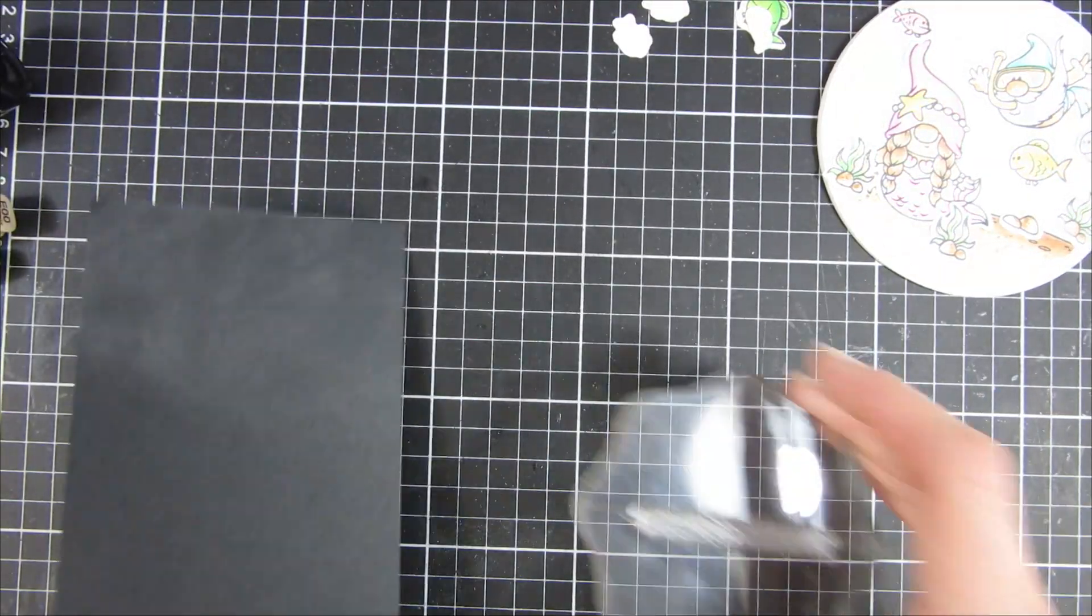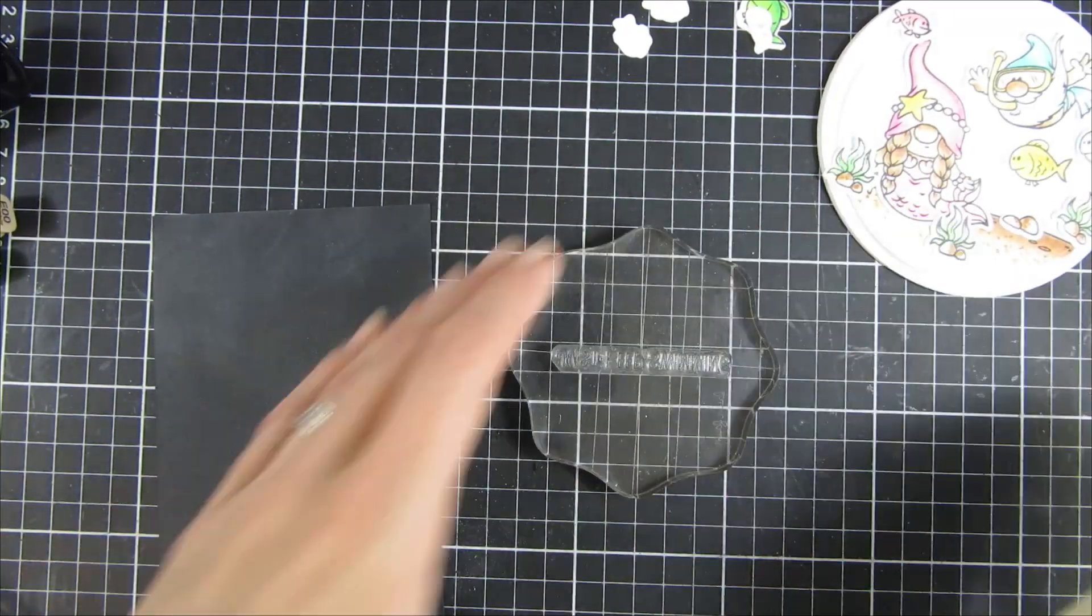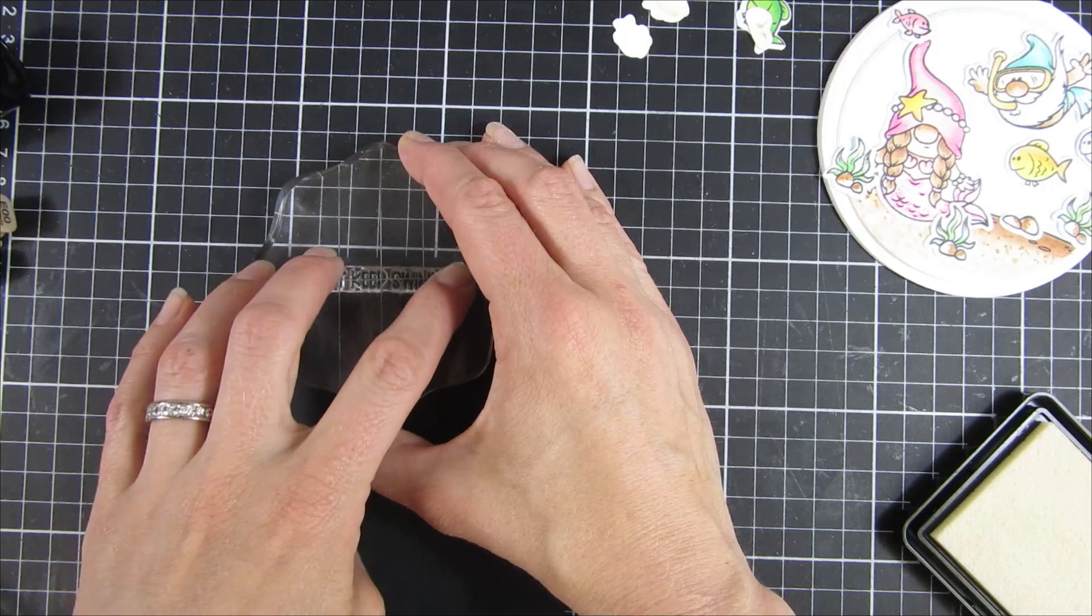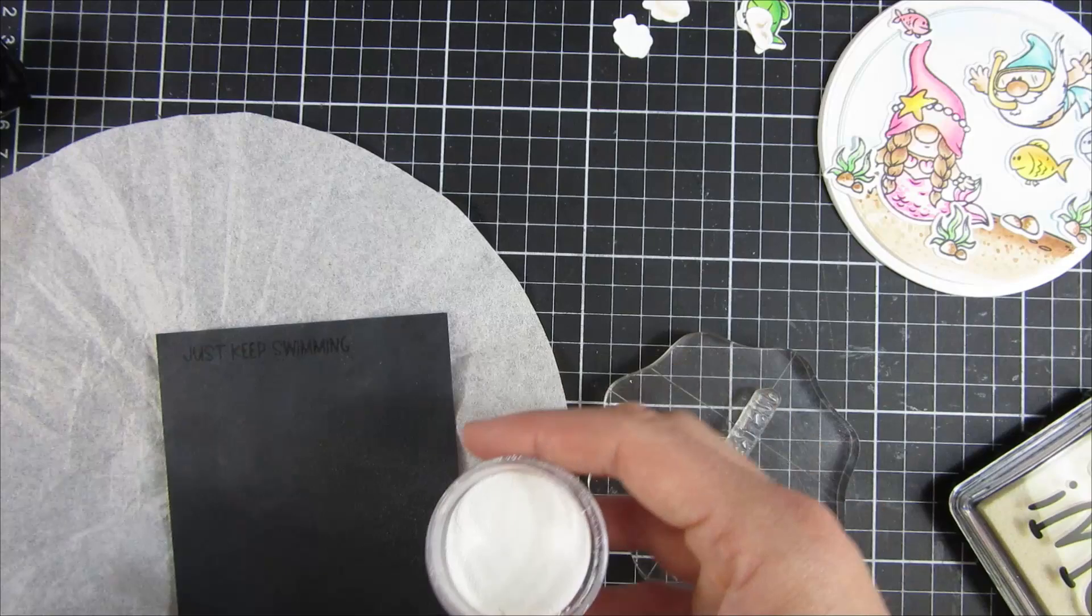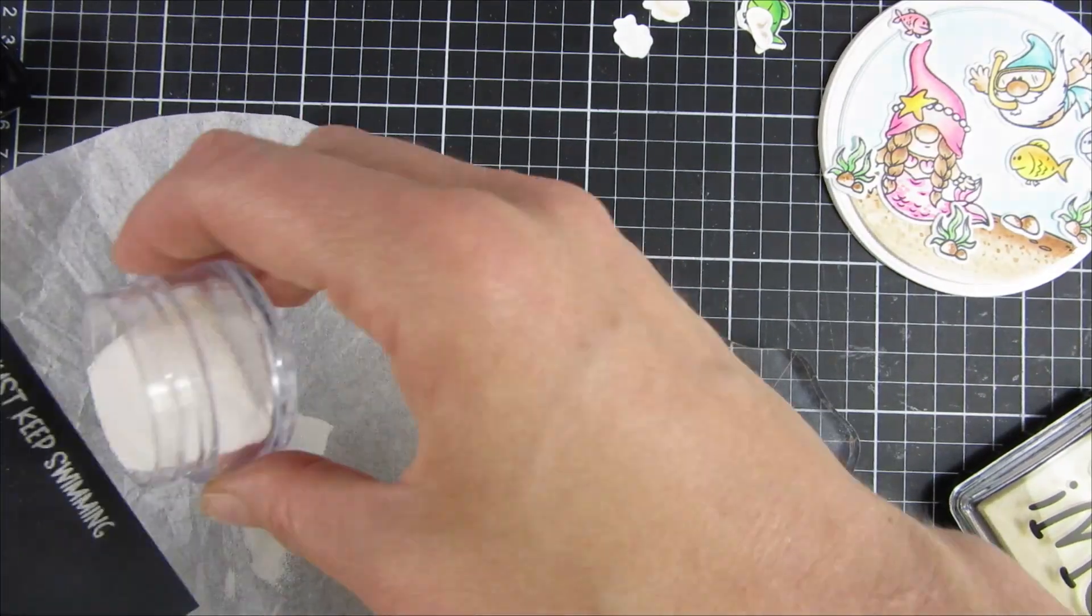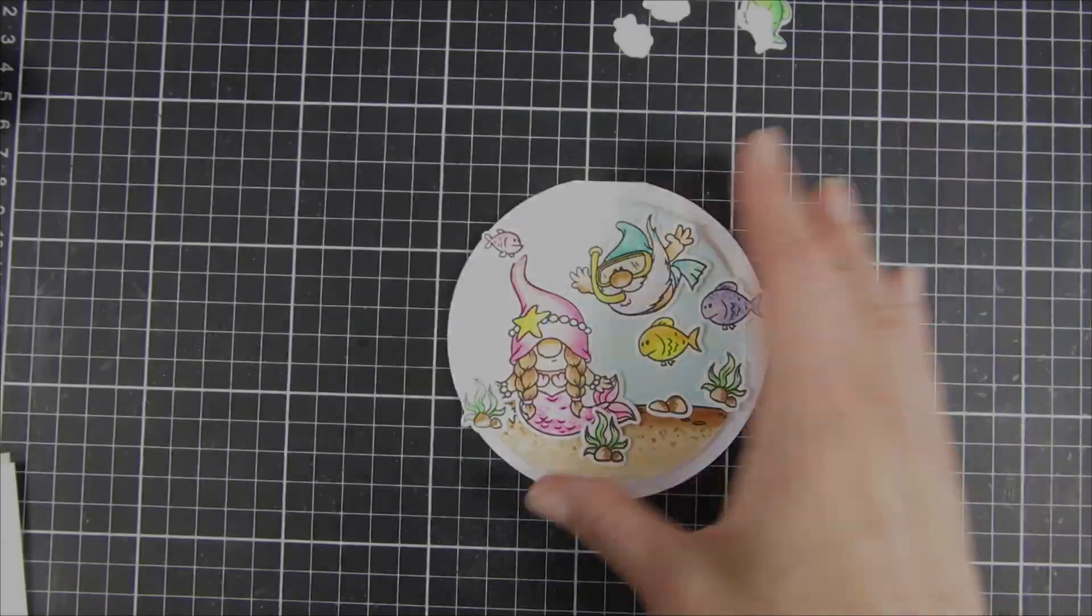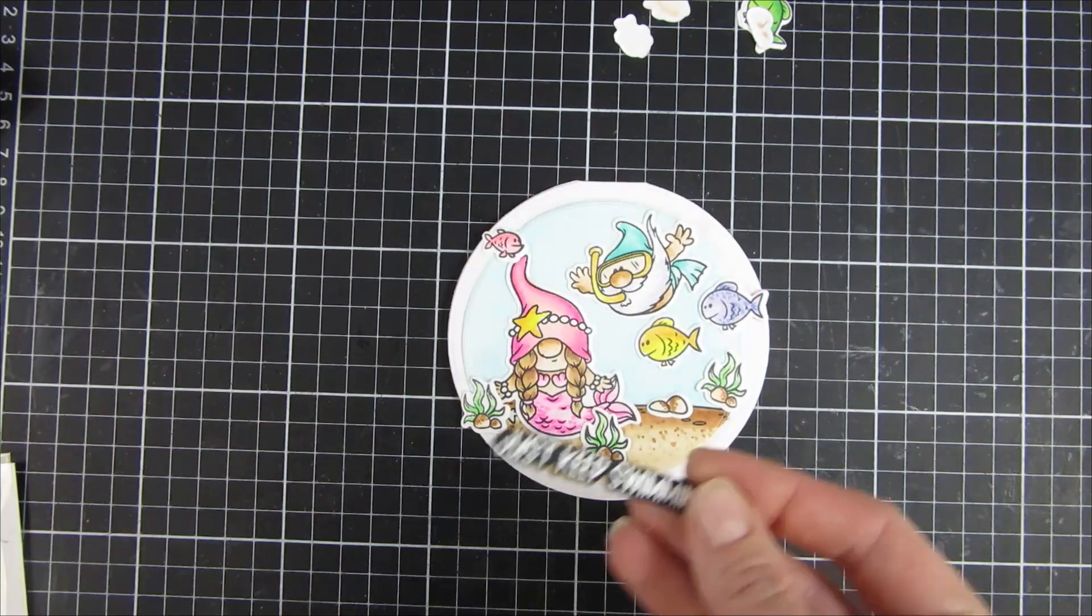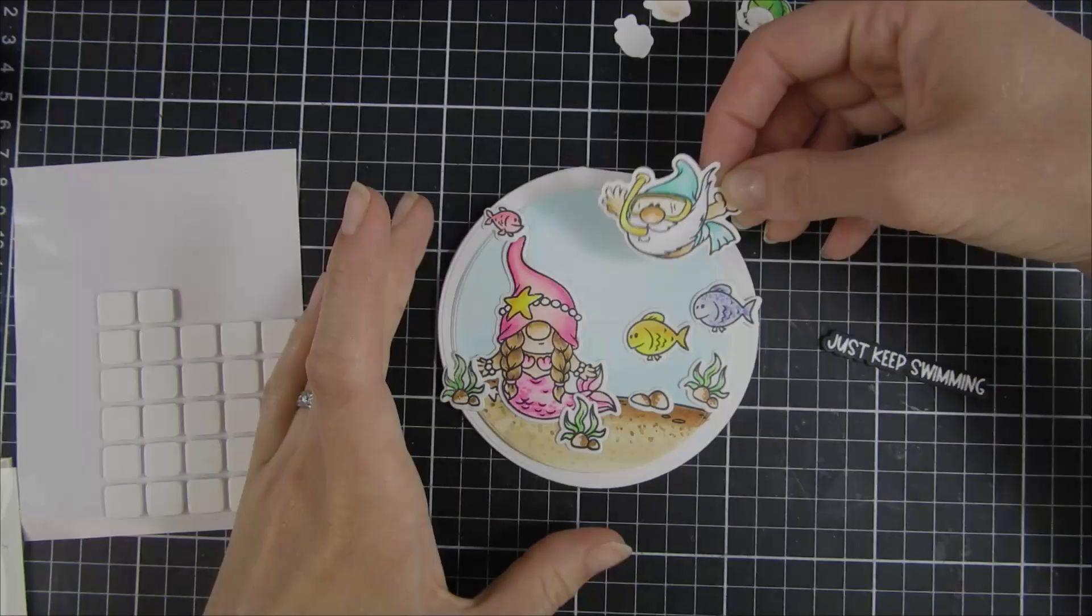Then I stamped the sentiment from this set, Just Keep Swimming, in some Versamark ink, or it was just a clear stick ink I think from Wow. Then I had some white embossing powder from Hero Arts that I sprinkled on top and then heat set off camera. In this die set there is a coordinating die to cut this sentiment out, so I cut it out with that die. Now the fun part comes - we can assemble our card.